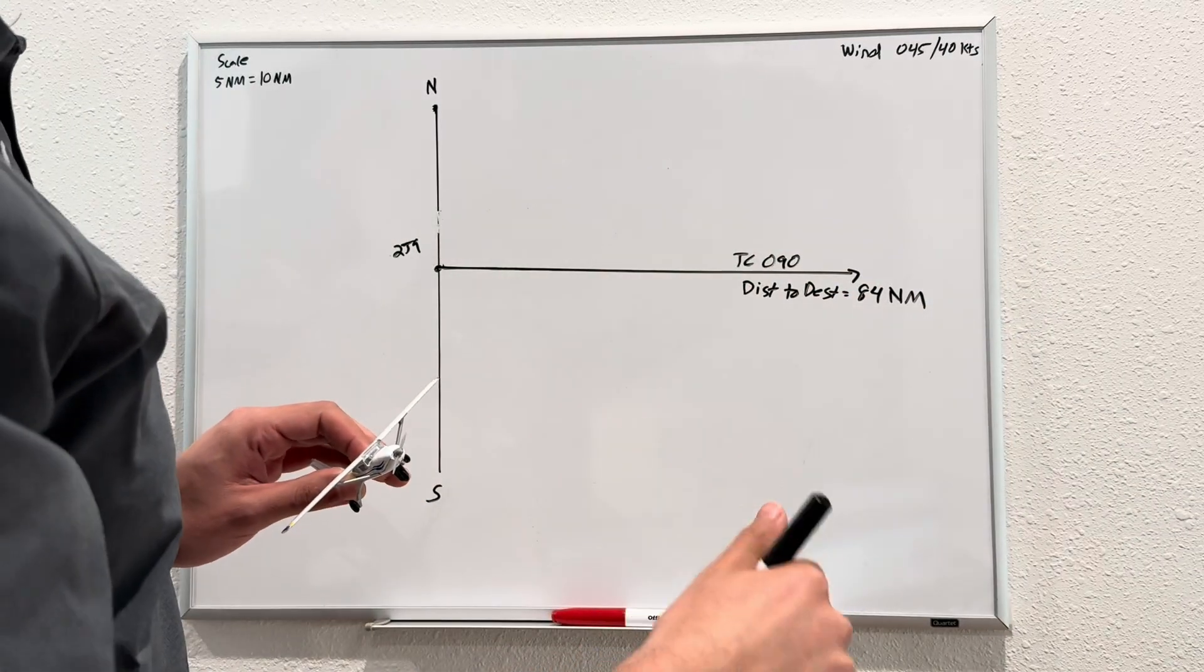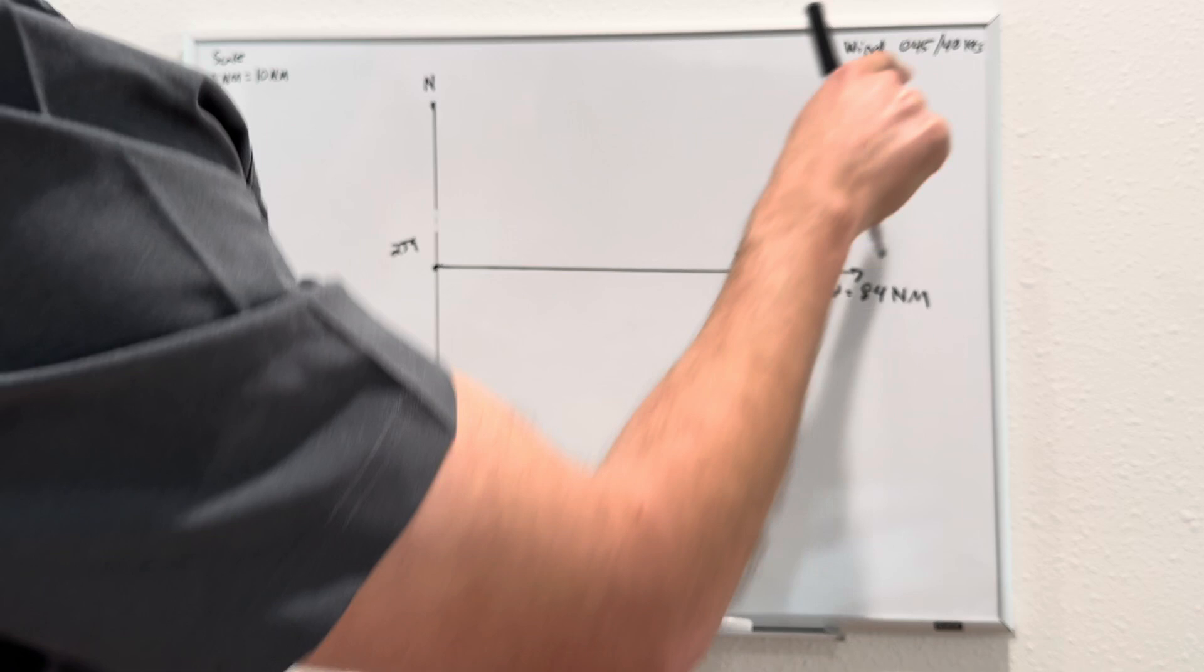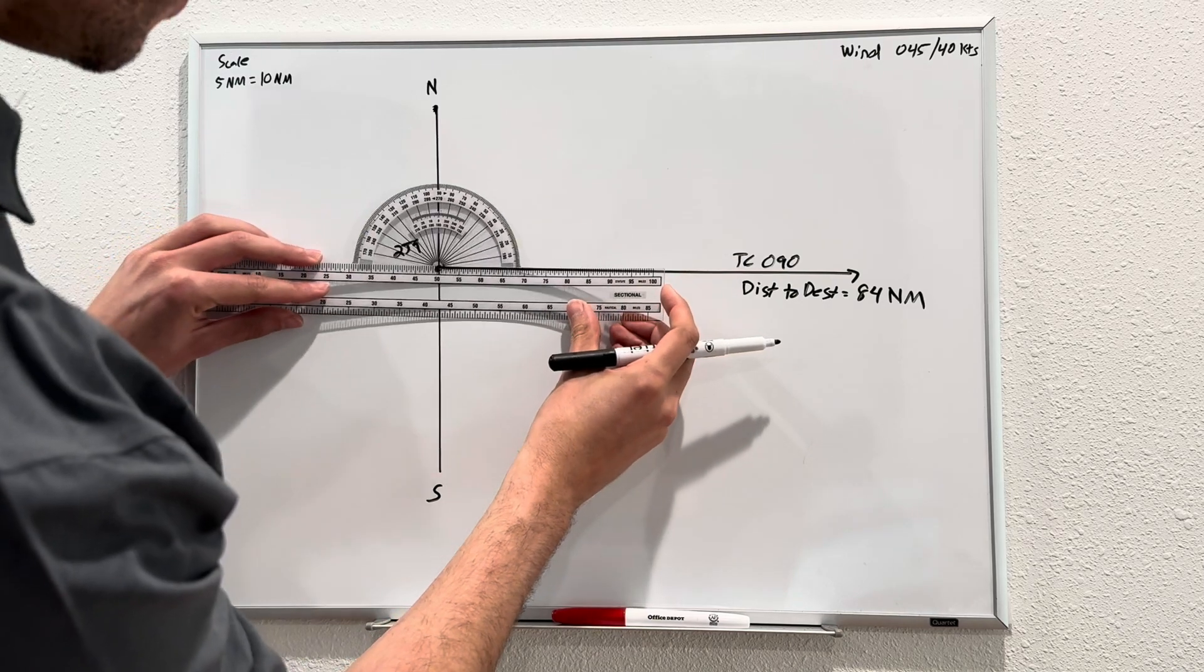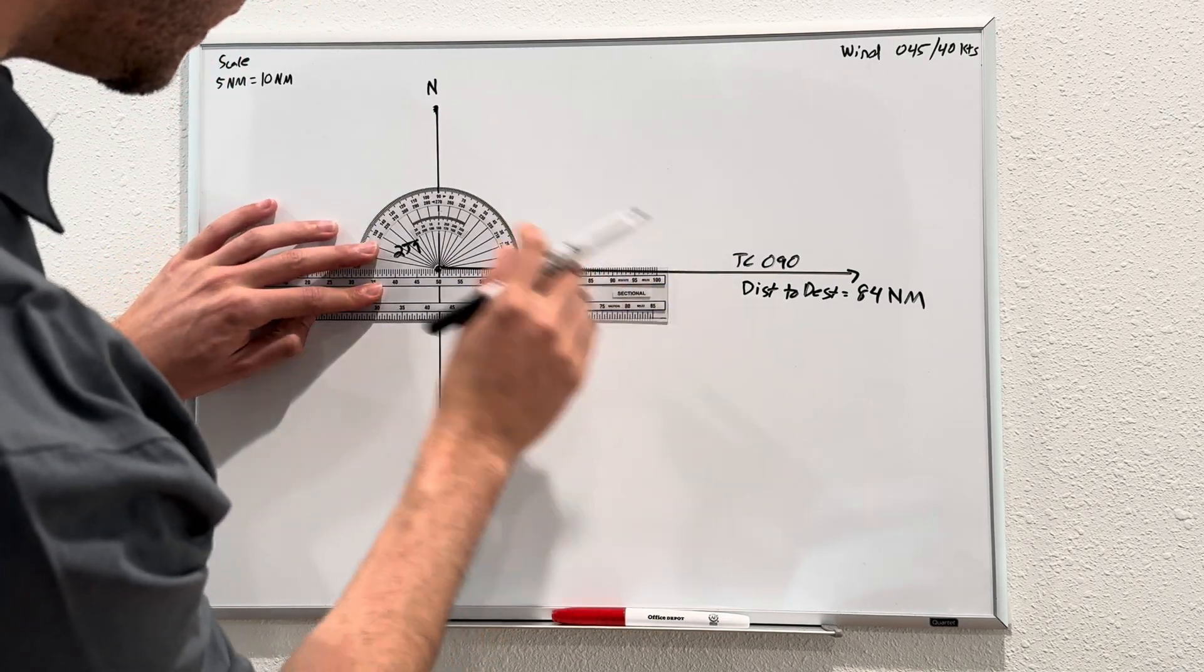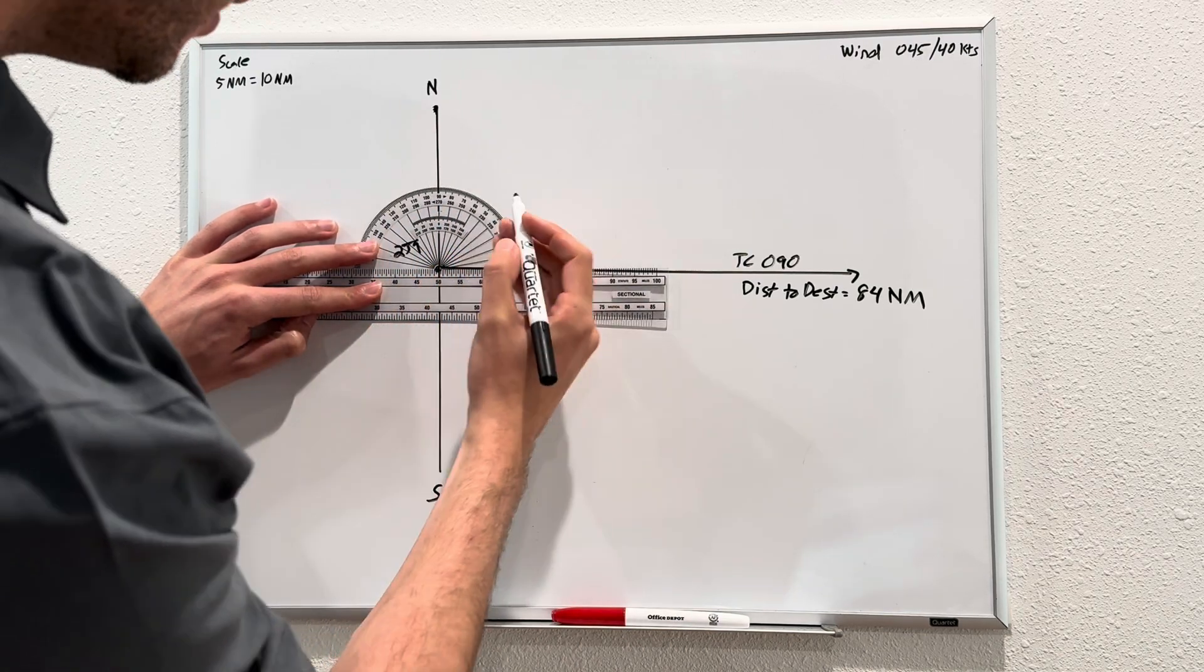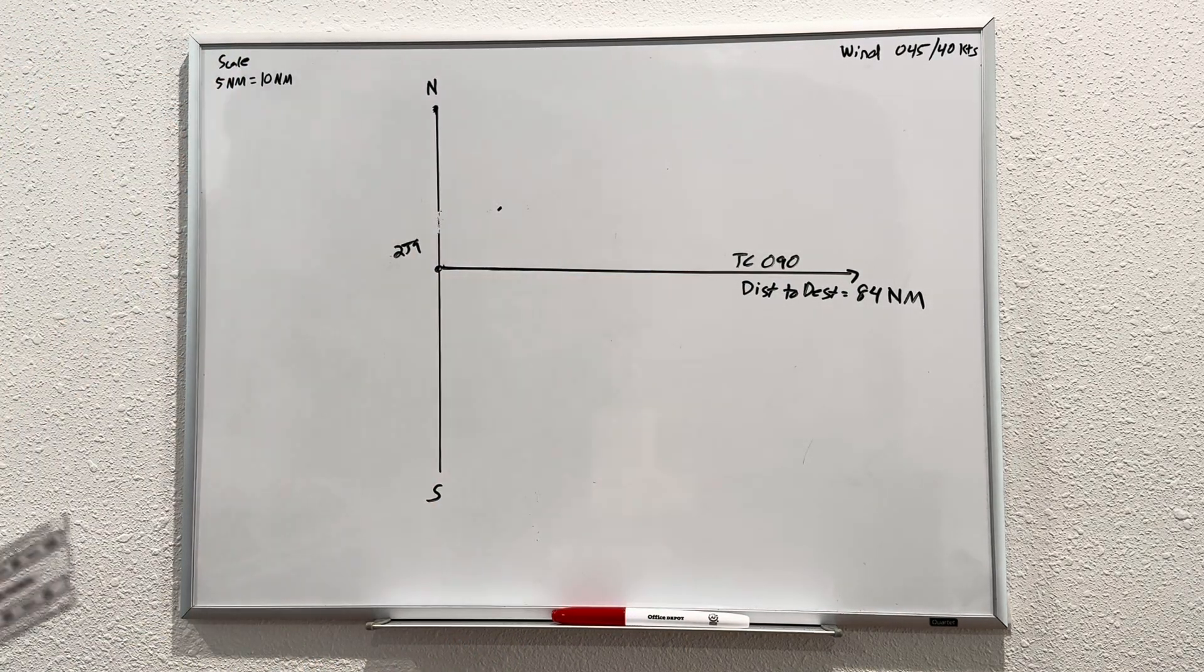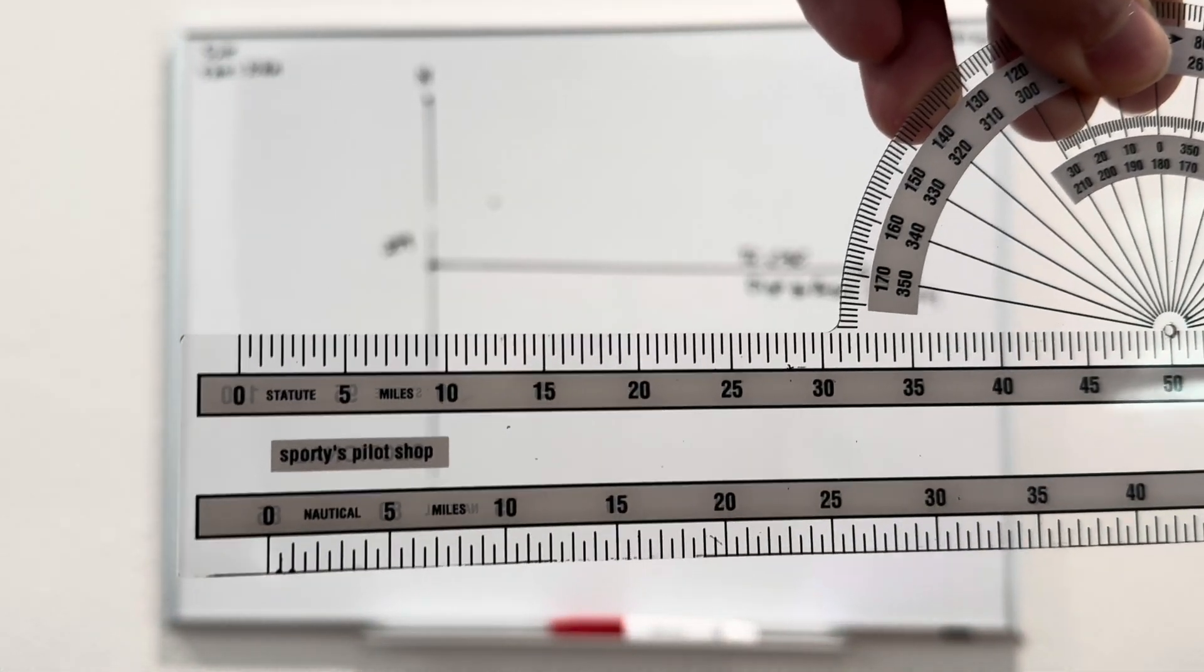Our wind situation today happens to be a quite heavy headwind from the northeast. Wind is always reported in the direction that it's coming from, so from 045 at 40 knots. Go ahead and grab your plotter. Let's mark 045. Let's be precise. We got 90 up top. I'm sorry, 000 up top, and we have 90 over here. So 45 is going to be right about there.